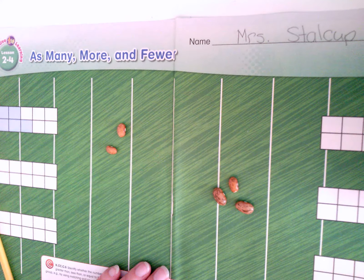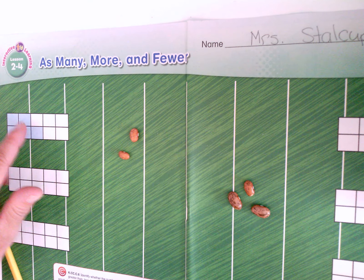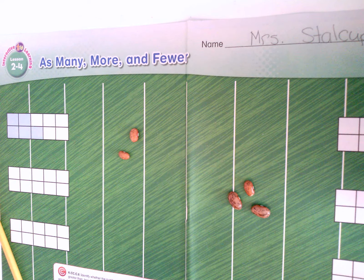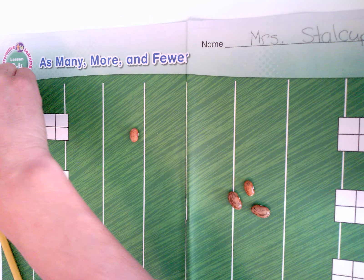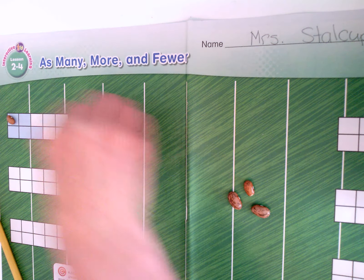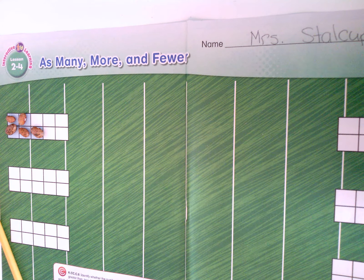We are going to use our little graphs over here — our tens frames — to compare the numbers. If I put this team in the top row: one, two, and this team on the bottom row: one, two, three, the numbers are easier to compare. I like to color the rows different colors because that helps me compare. I'm going to color the top row purple.